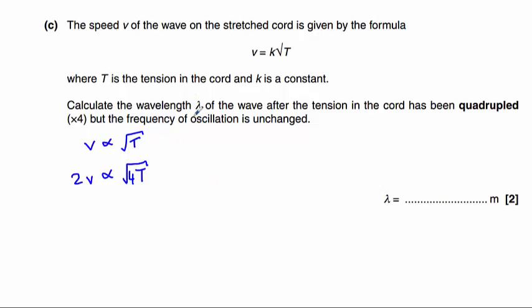However, it's not asking us for the speed, it's asking for the wavelength. We know that the speed v is related to the wavelength lambda by the equation v equals f lambda. If f is a constant, we can say that v is proportional to lambda. Therefore, if we have double the speed, we will have double the wavelength. Our original wavelength was 0.60 metres, so our new wavelength will be 0.60 metres times 2, which is 1.2 metres.